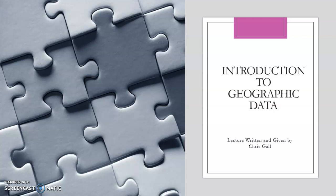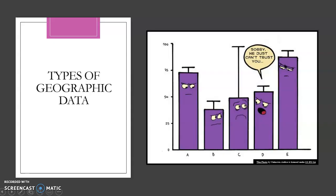This processing step will help you better learn and master the information to retain it for the AP exam in May. And now enjoy the lecture and I hope you learn a lot. So there are two major types of geographic data — or two major types of data really in general, no matter which field of study we're discussing — qualitative and quantitative.